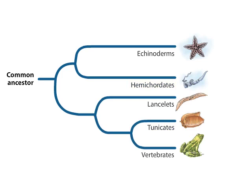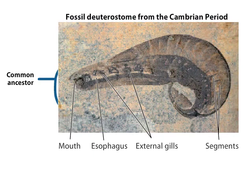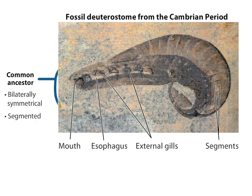Scientists are learning a lot about the ancestors of modern deuterostomes from fossils discovered in China, dating from the Cambrian period, about 500 million years ago. This particular fossil animal is an ancestral deuterostome with bilateral symmetry, external gills, and a segmented posterior body. Features such as these, together with phylogenetic analyses of living species, show that the earliest deuterostomes were bilaterally symmetrical, segmented animals with pharyngeal slits.